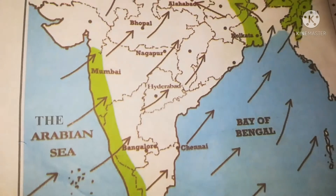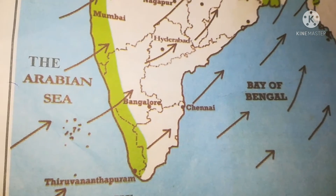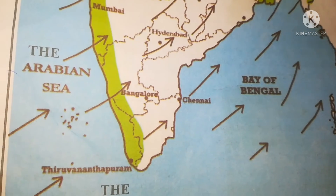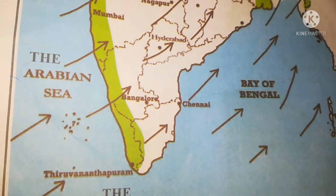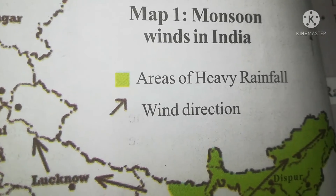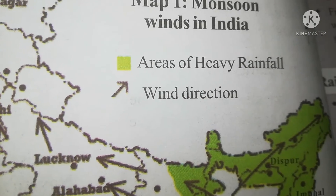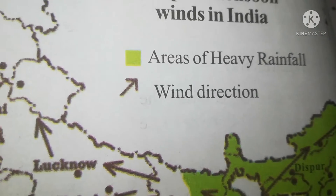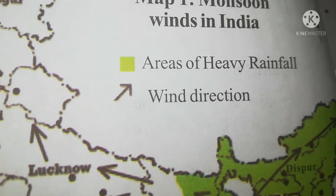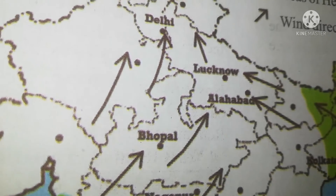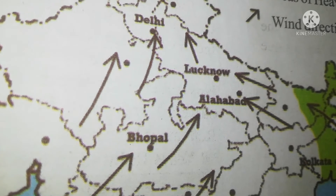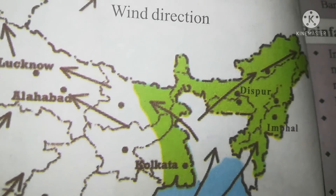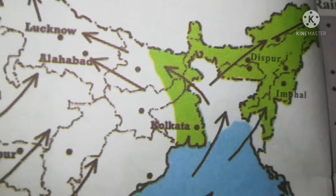And my dear students, do you know these winds blow only in summer season? Here you can see on your screen, we are using a green color to show areas of heavy rainfall. Which color are we using? We are using a light green color. And we are using this symbol to show the wind direction. We are using this light green color to show the areas of heavy rainfall.